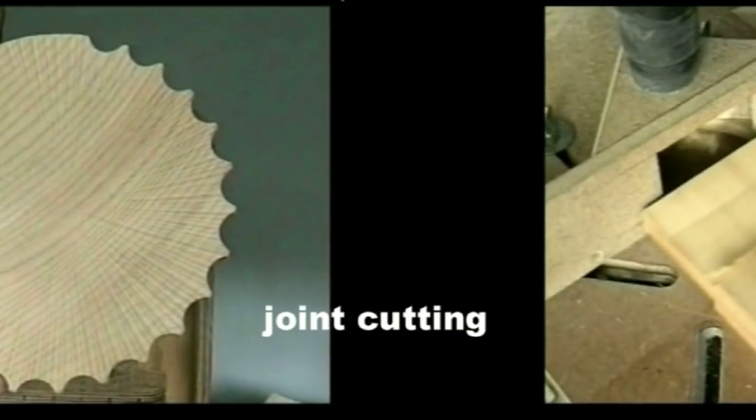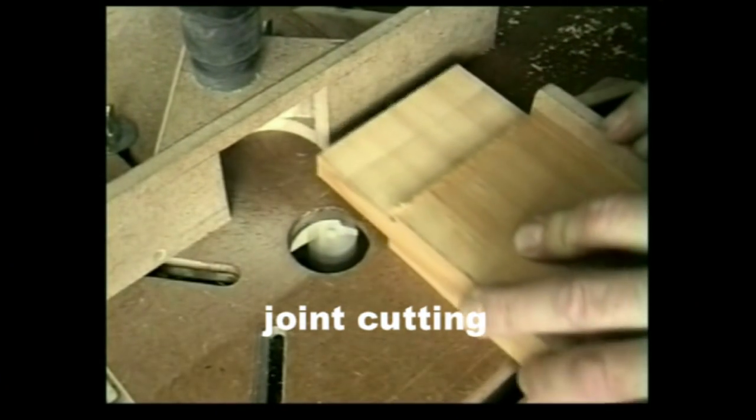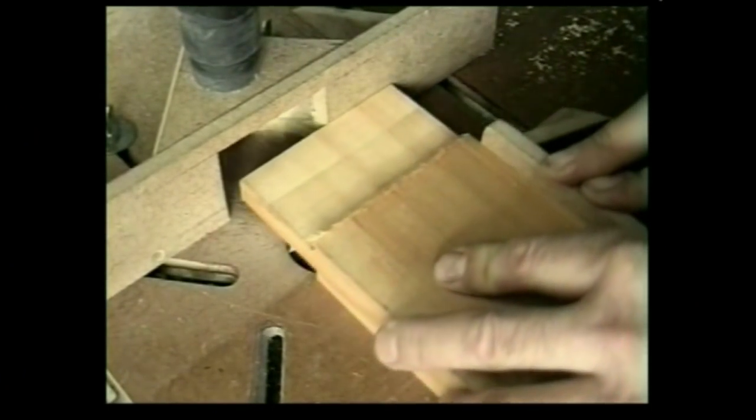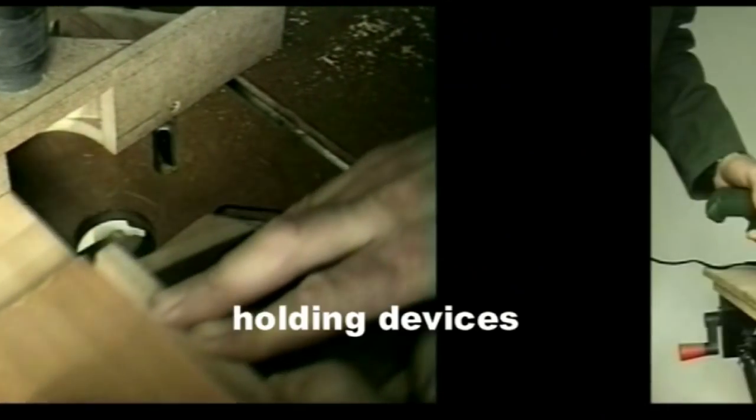The table fence acts as a stop for the joint shoulder. And in the case of tenon cheeks, each face is cut in turn.